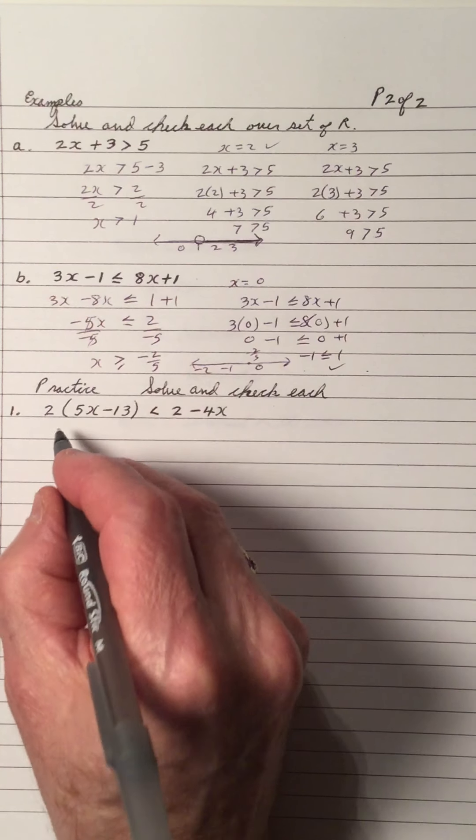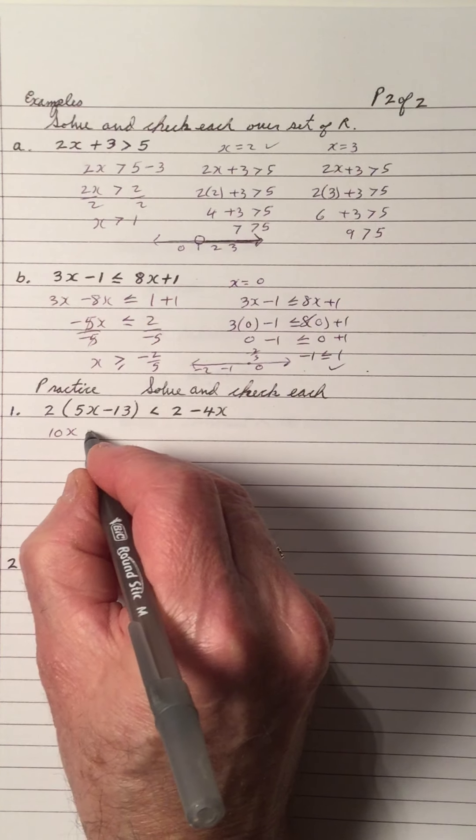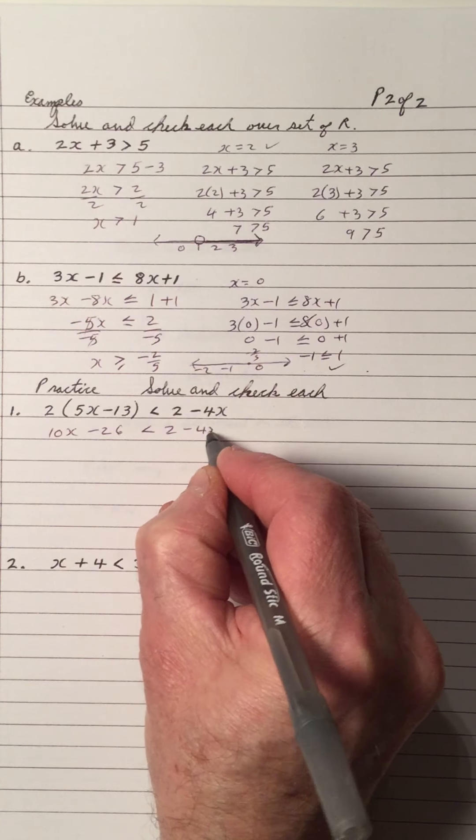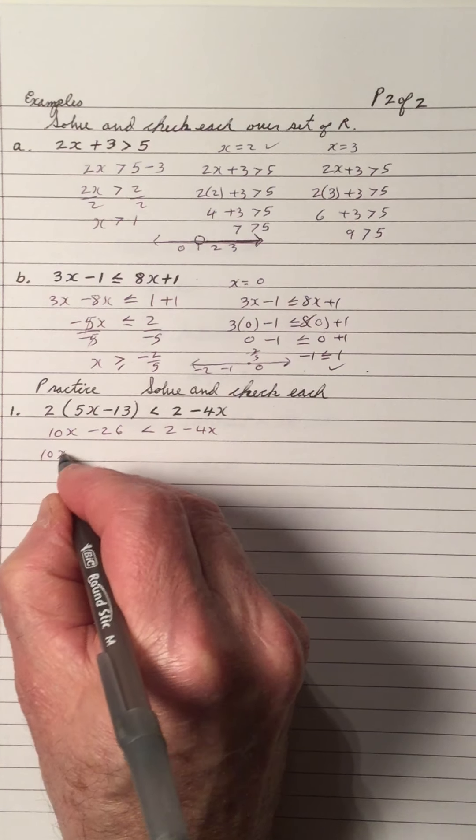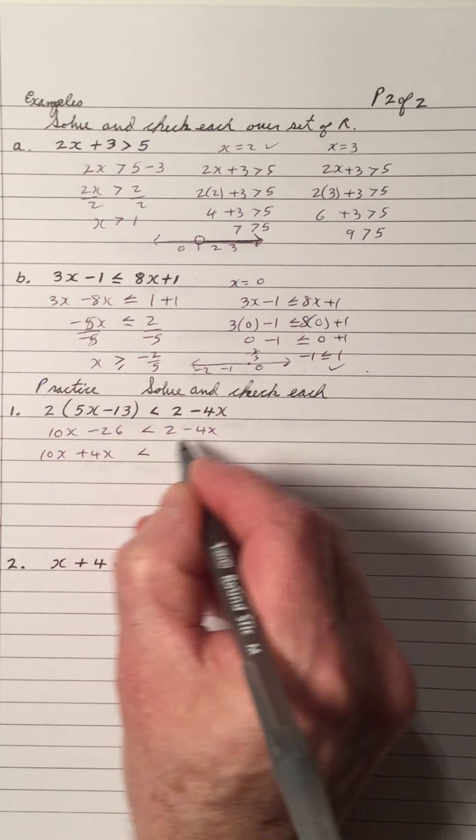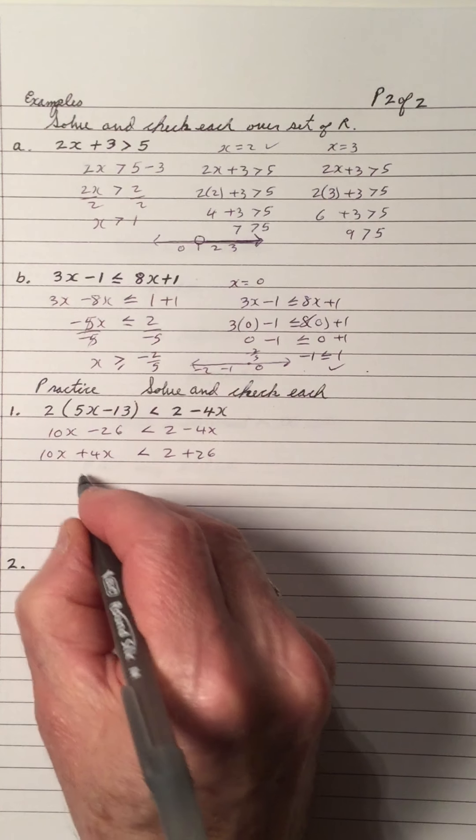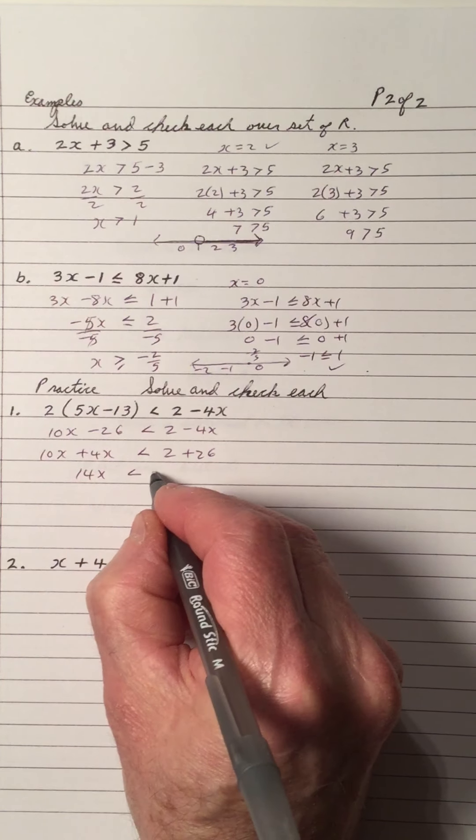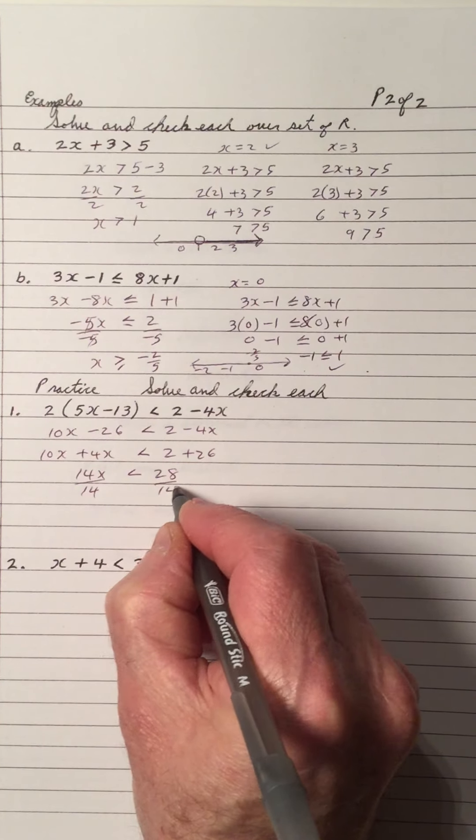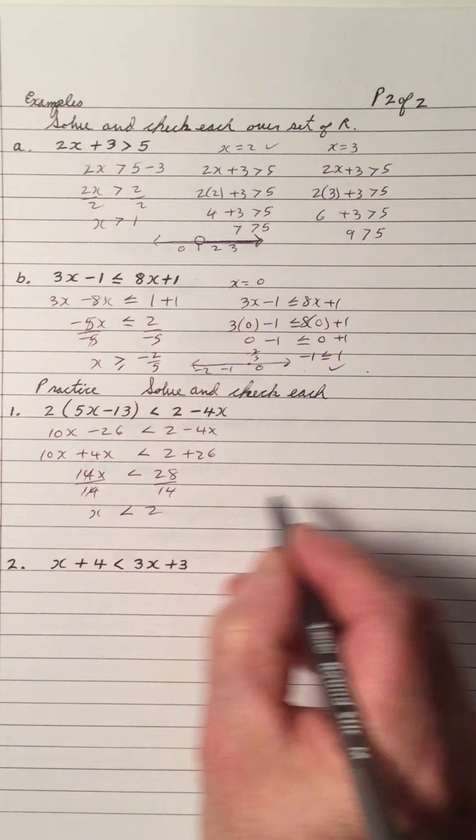We have to remove the brackets. So we multiply 2 by 5x, 10x. 2 times negative 13, negative 26. So we have the bracket removed. X's go to the left. Minus 4x becomes a plus 4x. And 26 negative becomes positive. So we get 14x is less than 28. We divide both sides by 14. And the 14's cancel out. Gives us x less than 2.